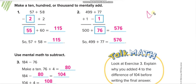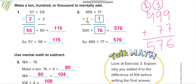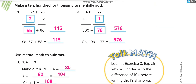Now: 499 plus 77. Adding directly: 9 plus 7 is 16, carry 1; 9 plus 7 plus 1 is 17, carry 1; 1 plus 4 plus 1 is 6 — answer is 576. Or mentally: take 1 from 77, making it 76, and give it to 499, making it 500. Then 500 plus 76 equals 576. That's why we adjust the numbers this way.